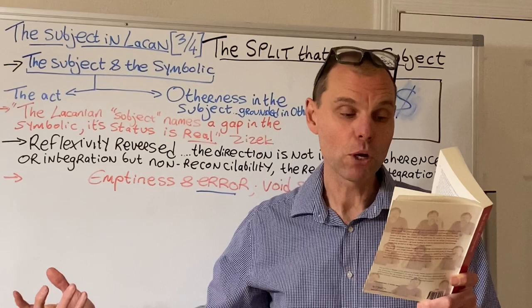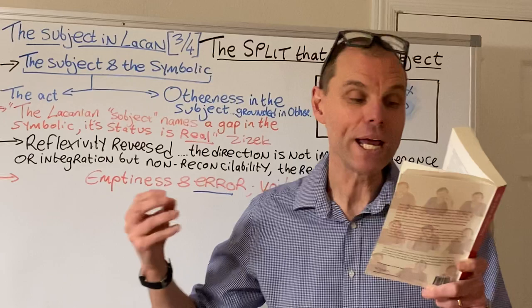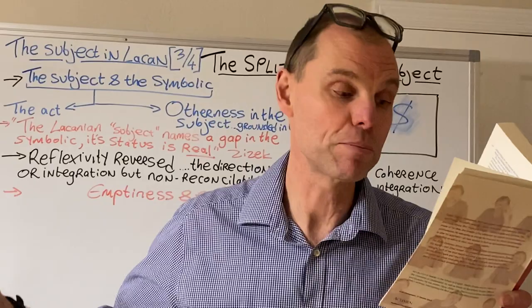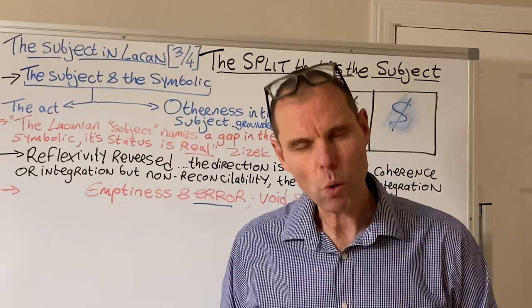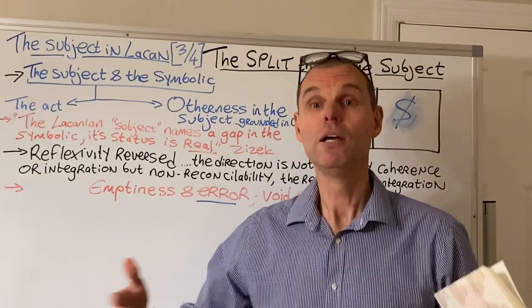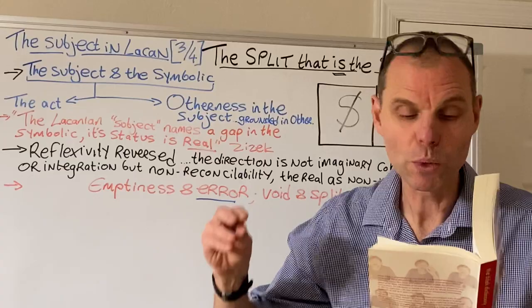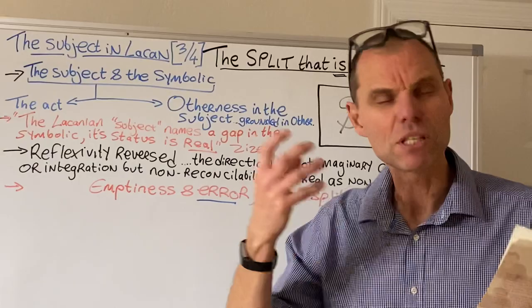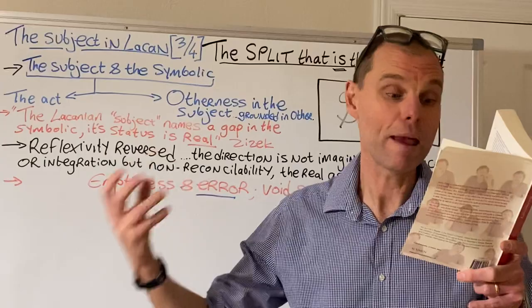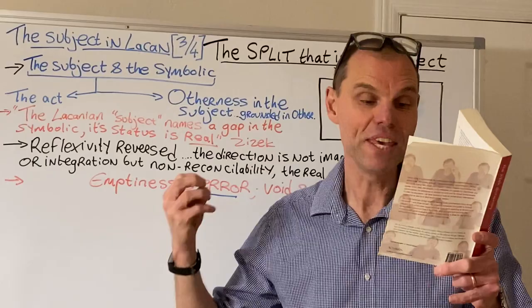Continuing on page 241: there is a kind of split introduced into the symbolic order. In the act there is no relying on the authority of the subject, or any transparent self-reflection by the subject. On the contrary, the act dispenses with the illusion that there is a subject — or at least a self-conscious and self-possessed subject that knows the effects of its actions in advance. This doesn't mean we can start thinking about some autonomous authority of a psychological subject. In the act we return to the experience of the subject as empty, a moment of doubt, a moment of uncertainty. The act is the subject.